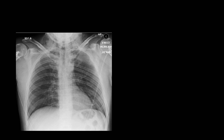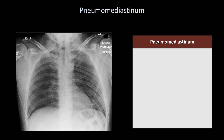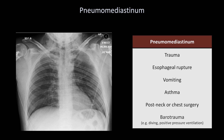The easier finding to spot is the subcutaneous emphysema in the neck. But look closely at the left mediastinal border — see this extra line? The intervening dark stripe is air in the mediastinum, a condition called pneumomediastinum, which often coexists with subcutaneous emphysema. Causes of pneumomediastinum include trauma, esophageal rupture, vomiting, asthma, neck or chest surgery, and barotrauma.